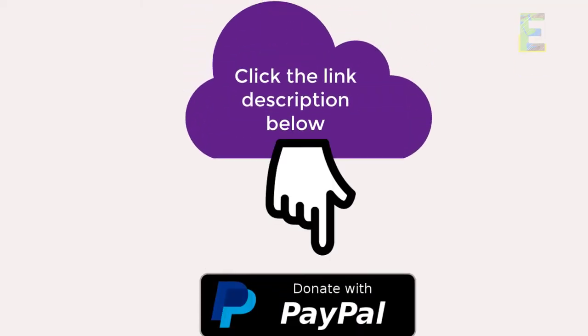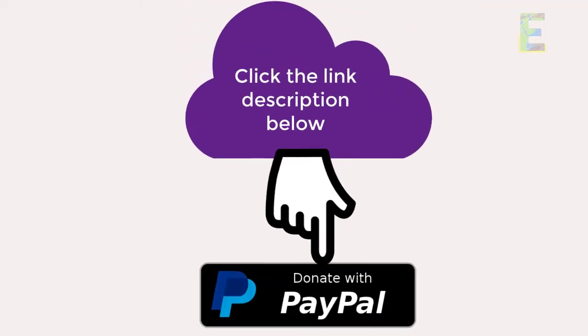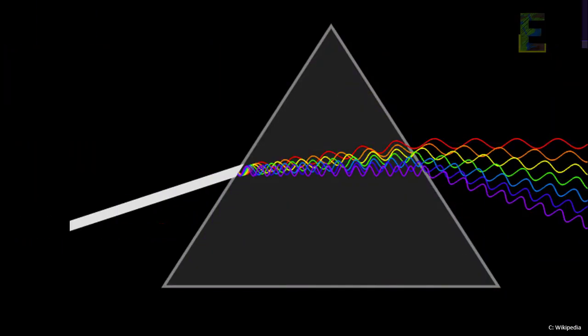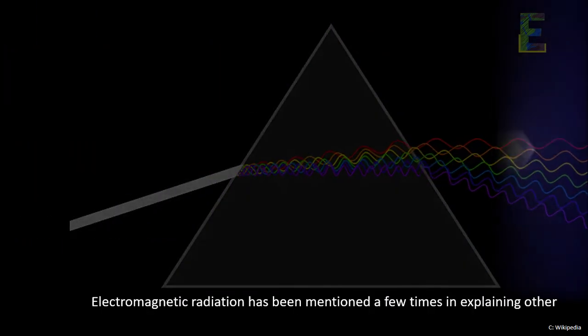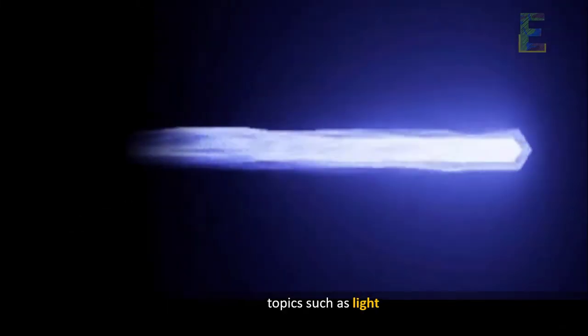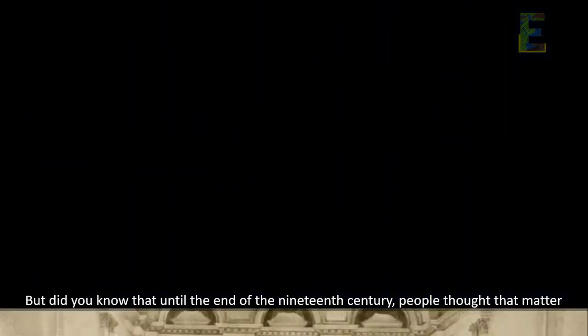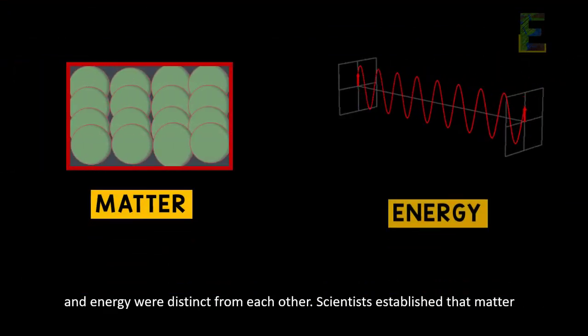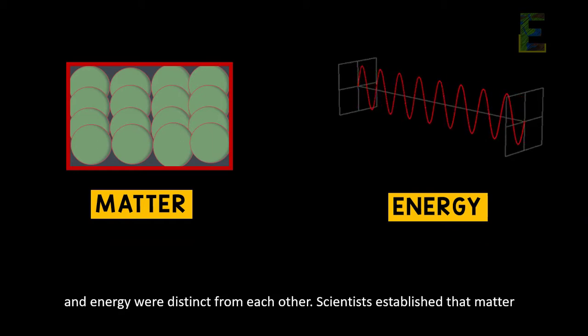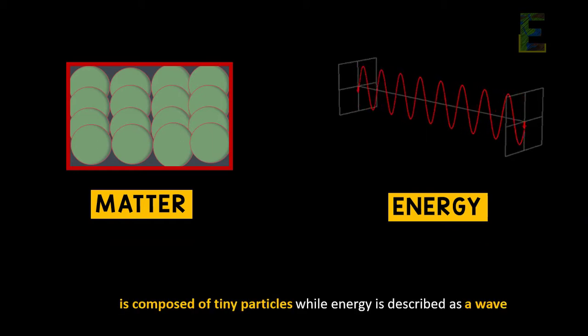Electromagnetic radiation has been mentioned a few times in explaining other topics such as light. But did you know that until the end of the 19th century, people thought that matter and energy were distinct from each other? Scientists established that matter is composed of tiny particles while energy is described as a wave and the source of light.